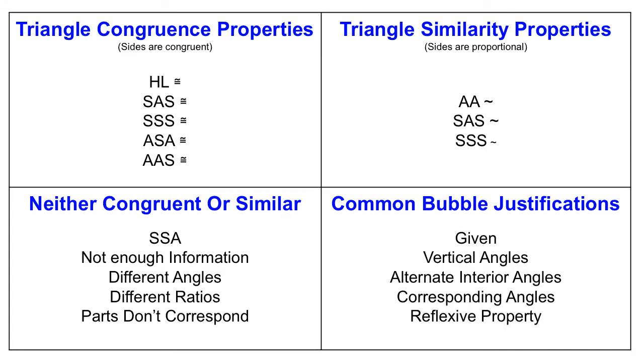The last thing I want to go over here is common justifications for your bubbles and your flowcharts. Given is a really common justification. That would be if something is just given to you on the picture. Like maybe you know two angles are both the same size, or maybe you know two side lengths are the same size.